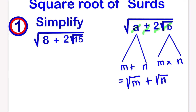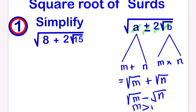Now in the case of minus, you have to write the value that is greater first. So if m is greater, we are going to have square root of m minus the square root of n, but m should be greater than n for the case of minus.